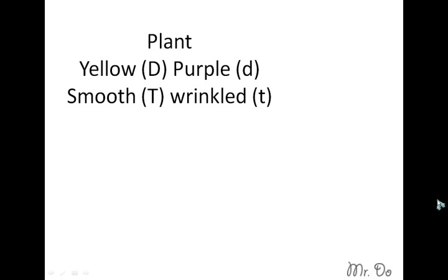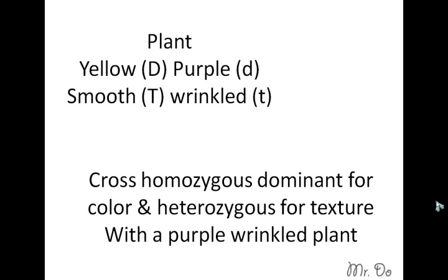Dihybrid cross practice. Let's say for example you have plants. In plants, yellow is capital D and purple is recessive small d. Smooth is capital T and wrinkle is small t. So let's make a cross. Let's cross a homozygous dominant for color and heterozygous for texture with a purple wrinkle plant.